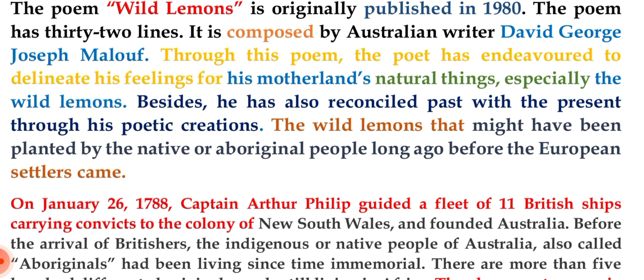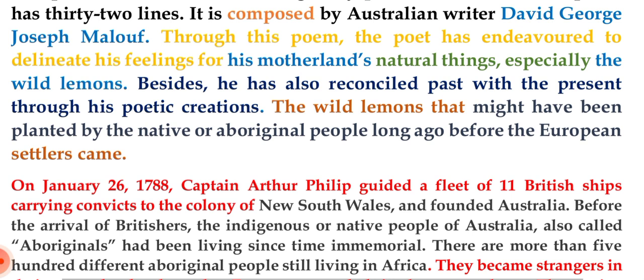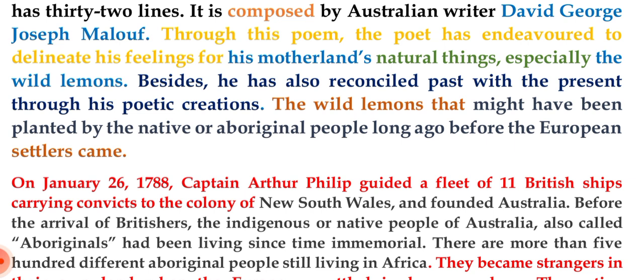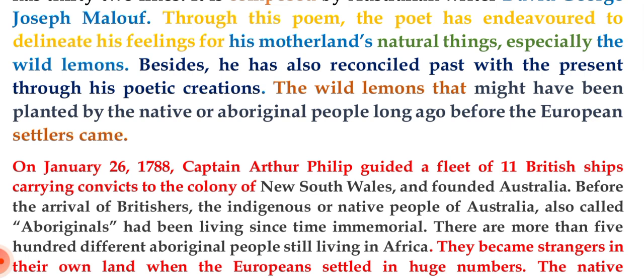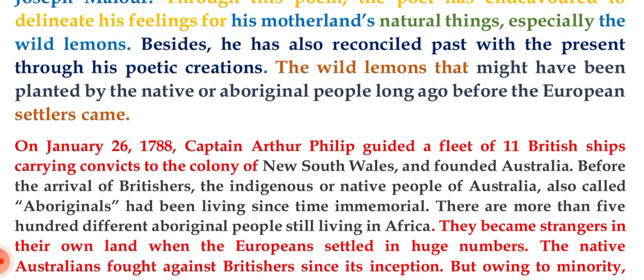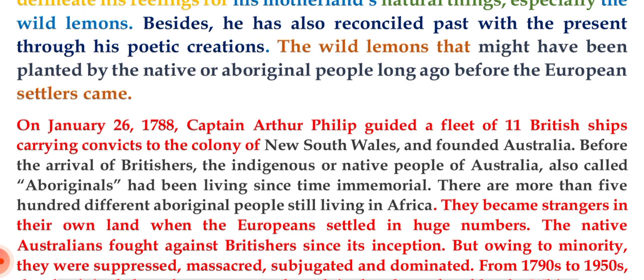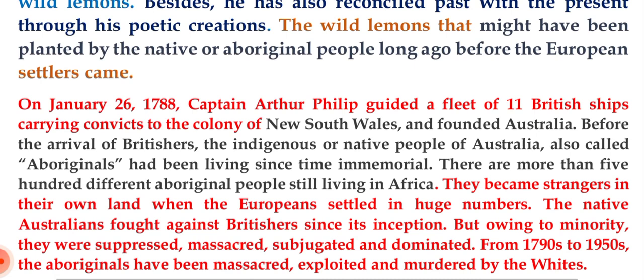When the British arrived, their population grew and the clash between Aboriginals and European settlers grew in a massive way. There are more than 500 different Aboriginal groups still living in Australia — note there is a typing mistake on screen where 'Africa' appears but it should read 'Australia.' The Aboriginals became strangers in their own land. Though they fought against the British since their arrival, owing to minority population and lack of modern techniques, they were suppressed, massacred, subjugated, and dominated by the white settlers.